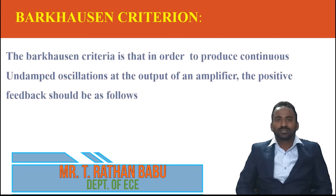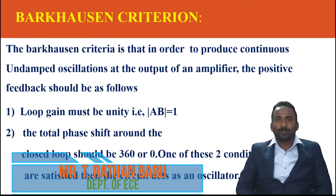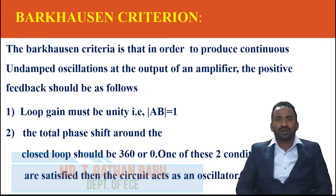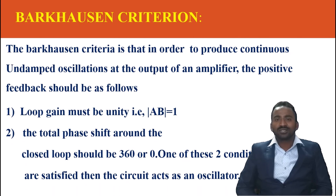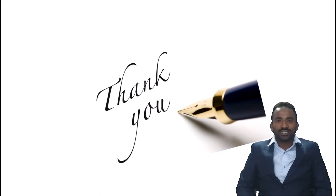Now let us look into the Barkhausen criteria — these are the conditions of an oscillator. The Barkhausen criteria states that in order to produce undamped oscillations at the output of an amplifier, the positive feedback should satisfy the following conditions: the first condition is the loop gain must be unity, that is |Aβ| = 1, where A indicates the gain of the amplifier and β indicates the feedback ratio. The second condition is the total phase shift around the closed loop must be 360 degrees or 0 degrees. If one of these two conditions is satisfied, the circuit acts as an oscillator. That's all for now; we will discuss more in upcoming videos. Thank you.